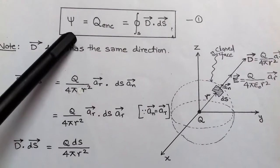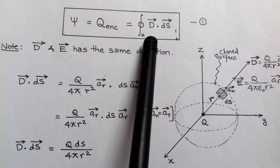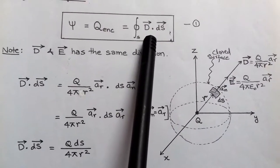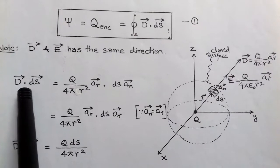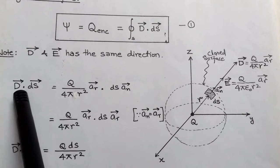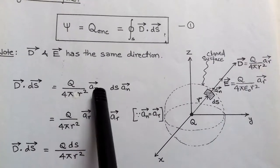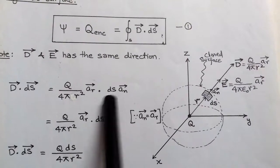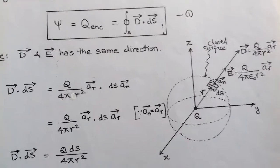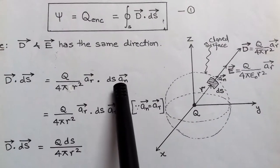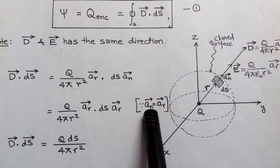This first equation is Gauss's law, and now we can prove it. We first calculate the integration part — the closed surface integration of D dot dS. We take the dot product: vector D dot vector dS. The electric flux density formula is q upon 4 pi r-squared in the direction of r, and the dS vector has magnitude dS with direction normal unit vector.